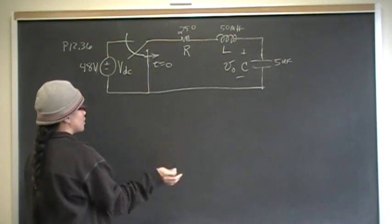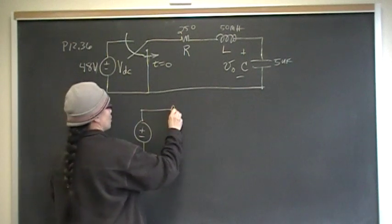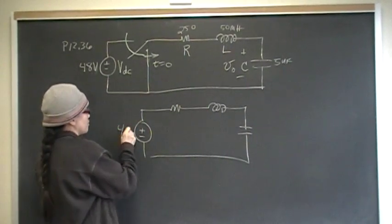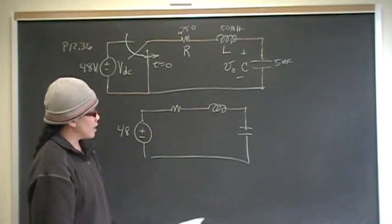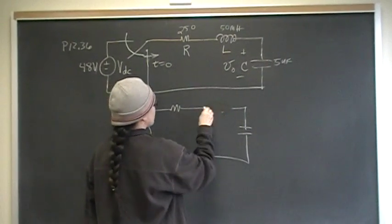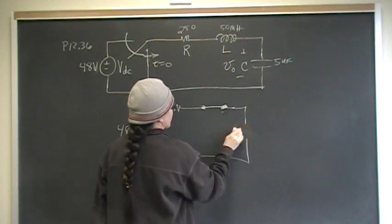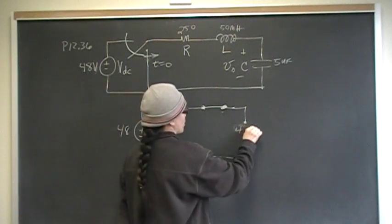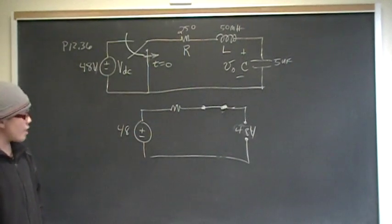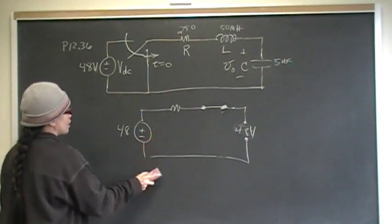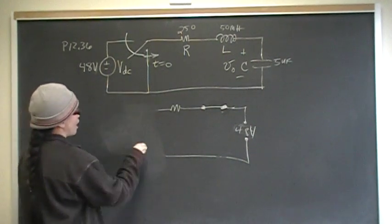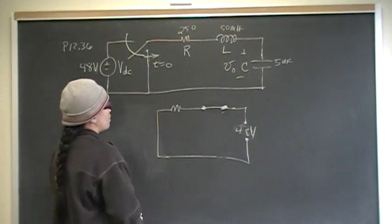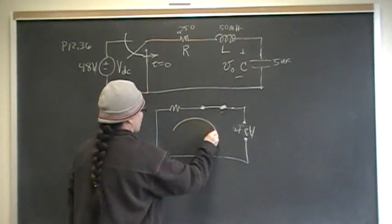Before the switch happens, this is the circuit we have. We have 48 volts connected in series. The circuit is in its steady state, which means the inductor is really a short, and the capacitor is an open. So the capacitor is an open, charged up to 48 volts. When the switch closes, it disconnects the circuit from the independent voltage source, and the capacitor will start to release its energy, and the current starts to flow.